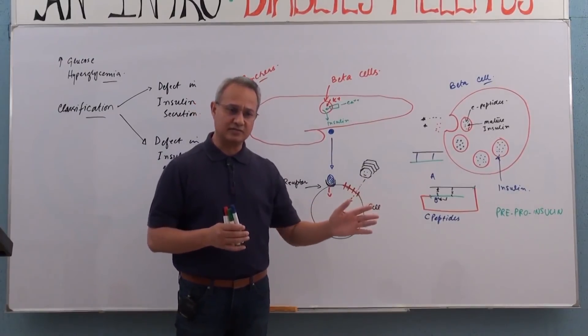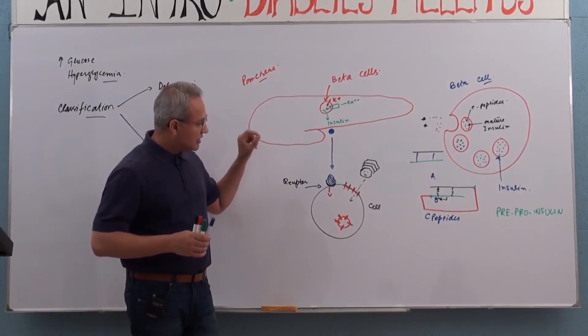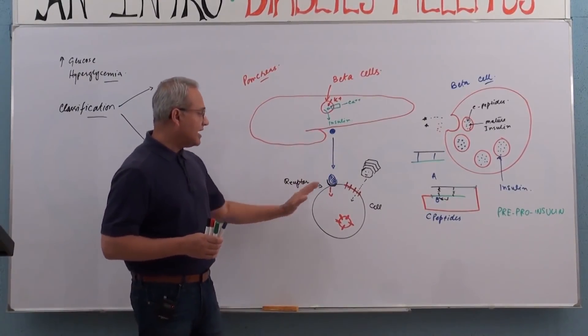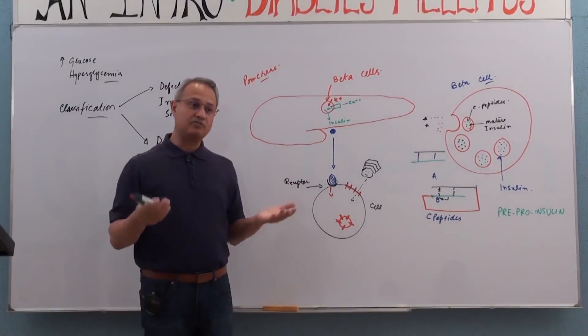There are many, many more mechanisms. We're not doing that right now. But I want you to at least understand this: that as the glucose cannot enter the cells, glucose is going to pile up outside.